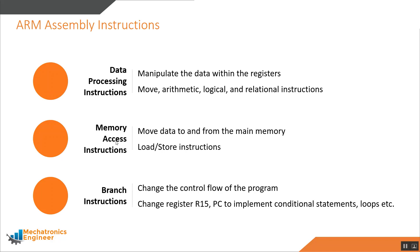Memory access instructions move data to and from the main memory. Since all other operations only work with immediate constant values or with values from registers, load and store instructions are necessary to deal with all but the smallest data sets. Branch instructions change the control flow of the program by modifying the value of the program counter register 15. They are needed to implement conditional statements, loops, and function calls.